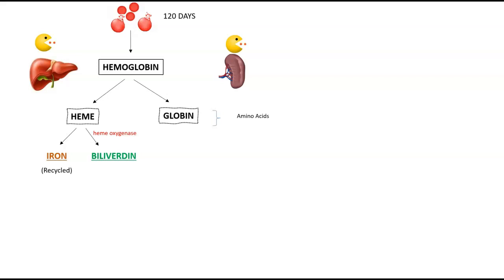Bilirubin is that green pigment that we typically see when you get a bruise. When you get a bruise, your skin undergoes a couple of changes in color — it experiences a green color, and that's the bilirubin, and as it ages you will also start seeing yellow, and that yellow is the bilirubin. Now bilirubin is further broken down into bilirubin in the unconjugated form. This is done by the enzyme bilirubin reductase.